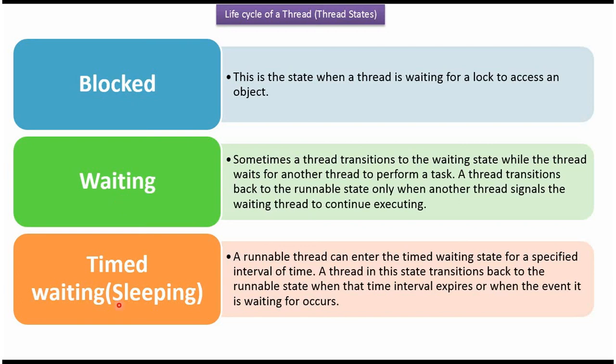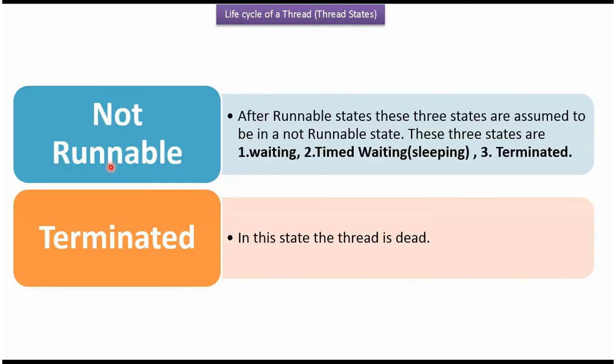A Runnable thread can enter the Sleeping state for a specified interval of time. Once that interval expires, the thread can go from the Sleeping state back to the Runnable state. The Non-runnable states are the Waiting state, the Sleeping state, and the Terminated state.